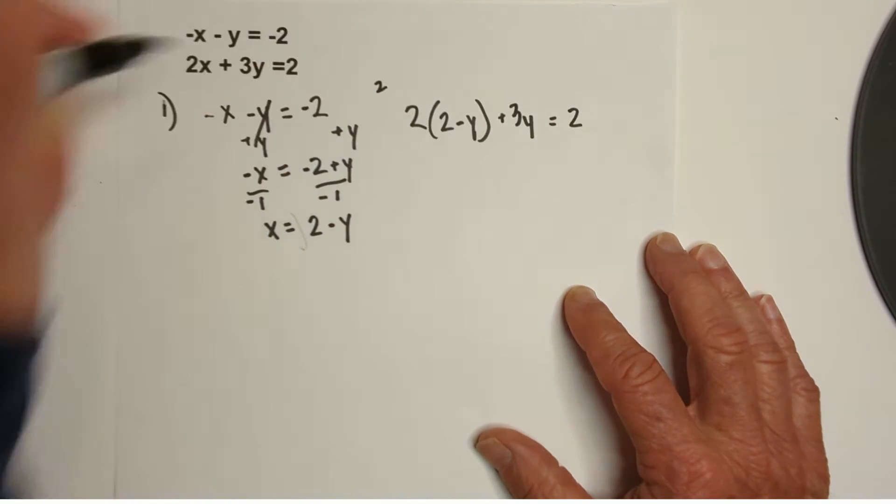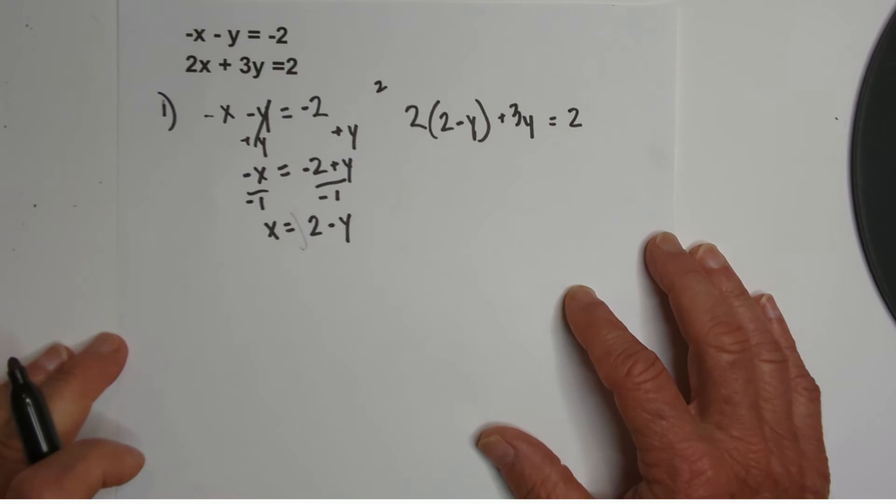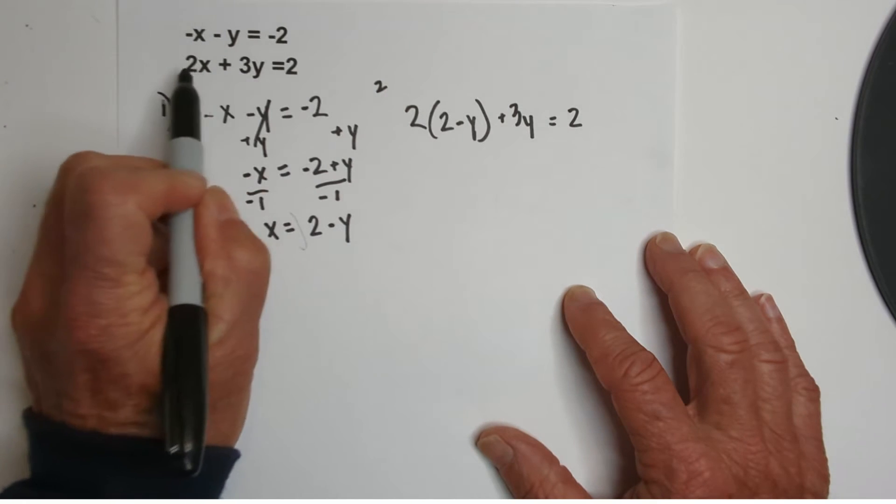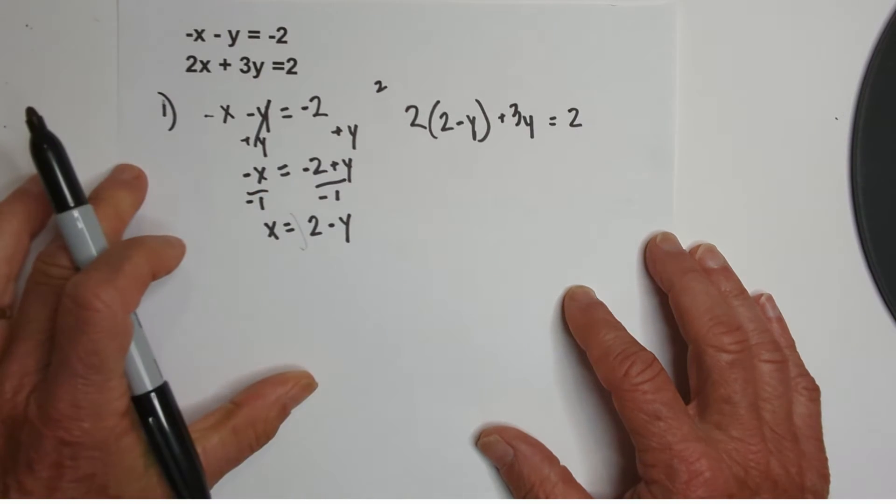So, this is like step 2 where I'm substituting the rewritten equation, this rewritten equation, into the other linear equation right there.